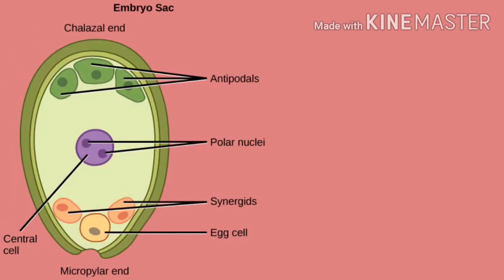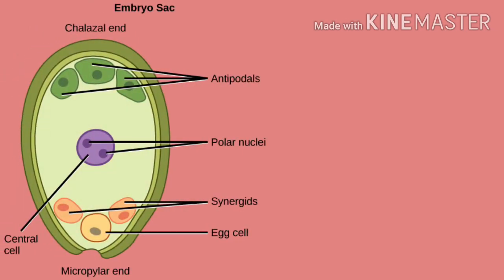The embryo sac has three cells towards the chalaza; these are known as antipodals. There are two nuclei in the middle called the polar nuclei. Three cells are towards the micropyle. The middle larger cell is known as egg. Two smaller cells are called synergids. The egg and the two synergids form the egg apparatus.